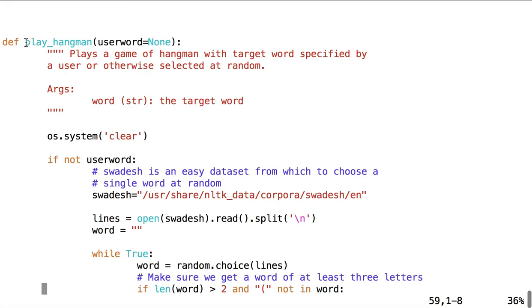And the method playHangman, which has a parameter, userWord, which defaults to none. And we'll see how that works when we get to that point in the code.